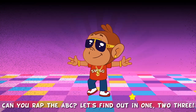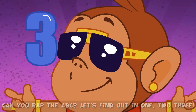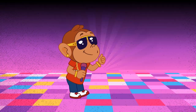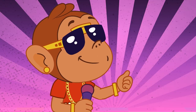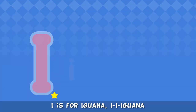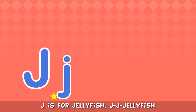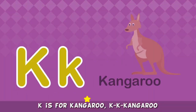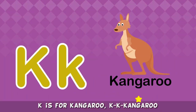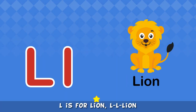Let's find out in 1, 2, 3! I is for Iguana. J is for Jellyfish. K is for Kangaroo. L is for Lion.